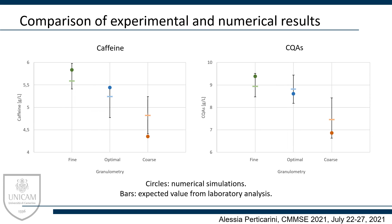The figures in this and the next slide show the comparison between the numerical and experimental results for the tested substances, where the granulometry varies along the x-axis. The black vertical bars are the range identified from the chemical analysis, the horizontal bars are the expected value calculated from the experimental data, while the circle markers are the results of the numerical simulation. The left figure shows the comparison for caffeine. The comparison shows a good agreement: the simulated caffeine values for fine and optimal granulometry fall in the range identified by experimental data, while for the coarse granulometry there is an underestimation of less than 2%. The right figure shows the comparison for the chlorogenic acids; for this substance the results are even better, as all simulated values fall in the range identified by the experimental data.